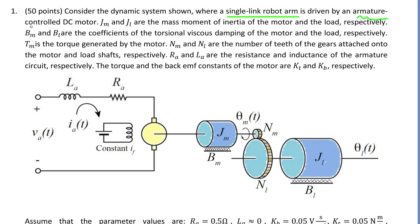Some parameters: J, mass moment of inertia, M is for motor, L is for robot arm load. B, torsional viscous damping coefficient. Tm, torque generated by motor. N, number of teeth of the gears. Ra, resistance. La, inductance of the circuit.